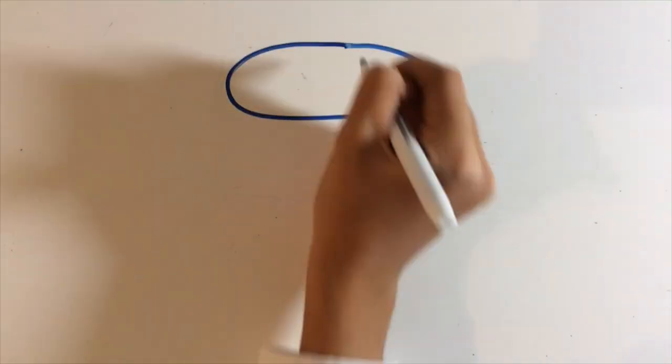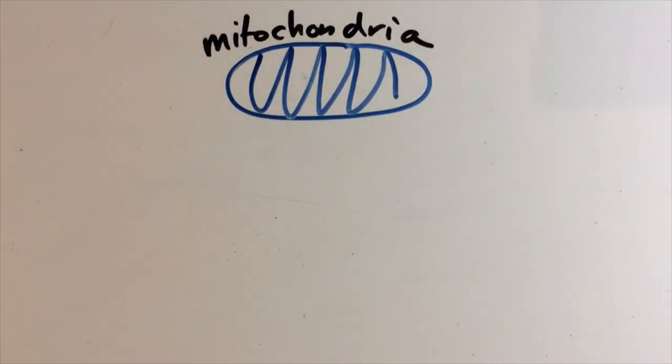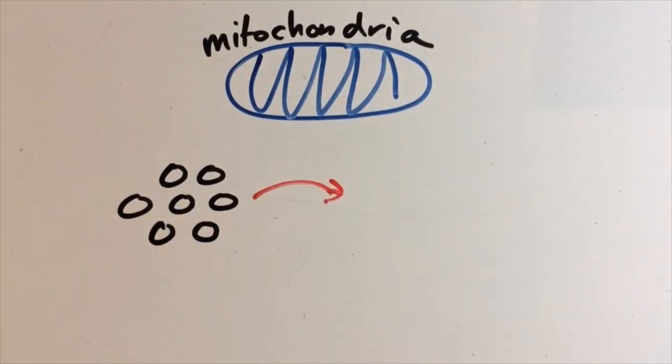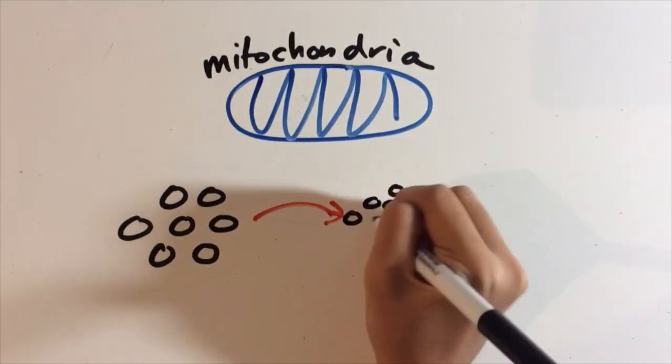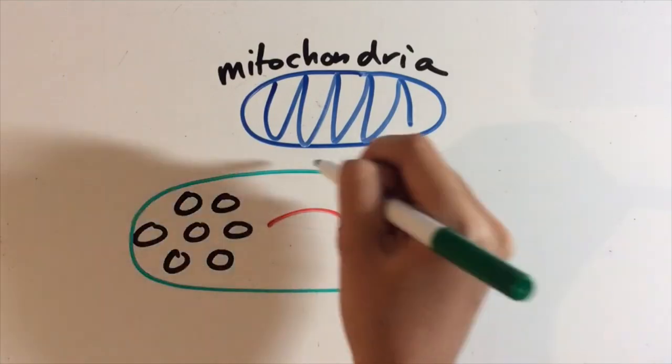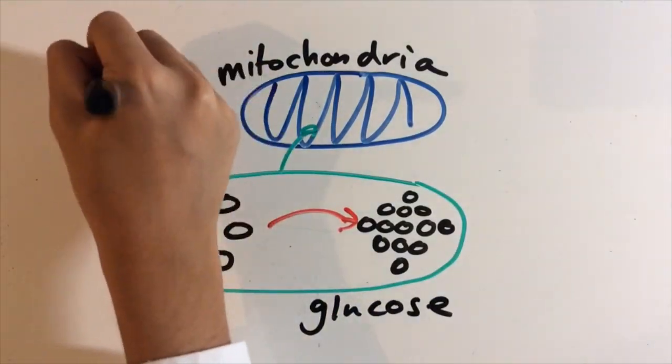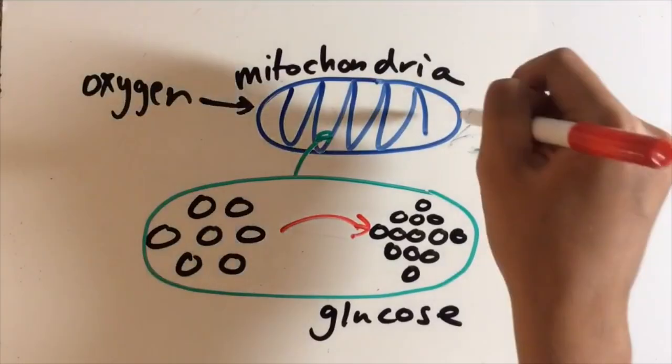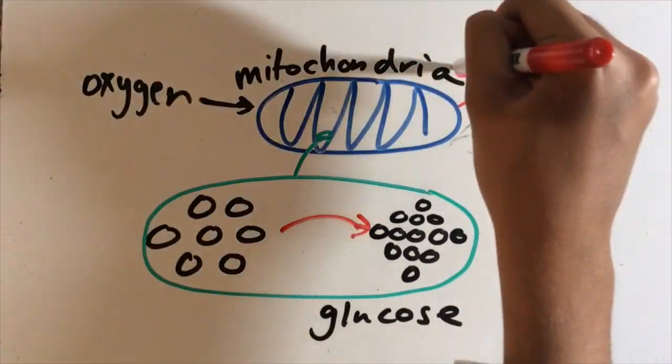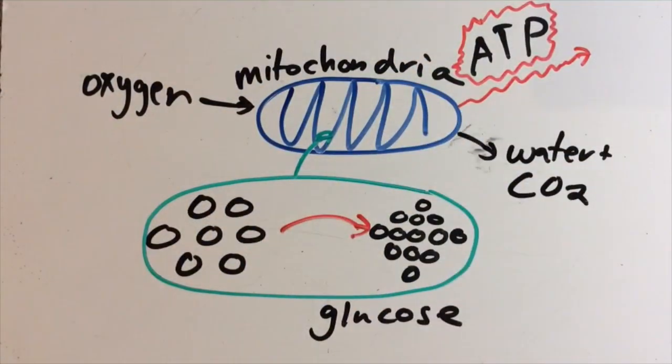The second stage happens in the mitochondria, where the molecules are broken down even more using oxygen obtained from breathing, and this releases a large amount of energy as ATP. Water and CO2 are released as waste products through breathing.